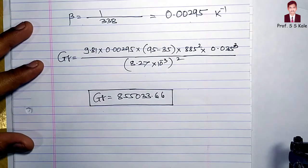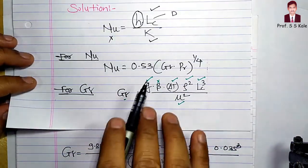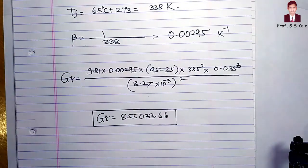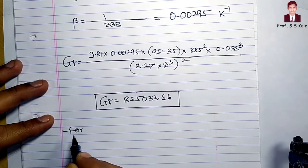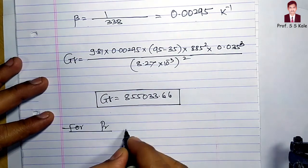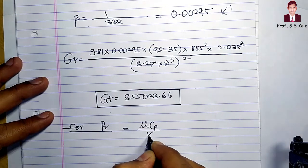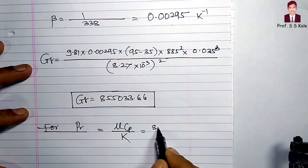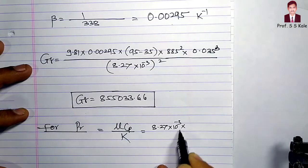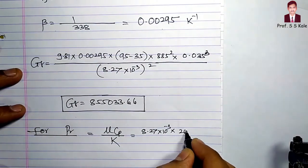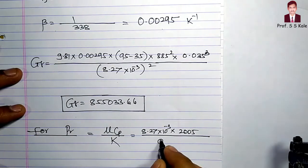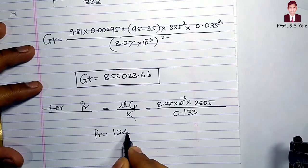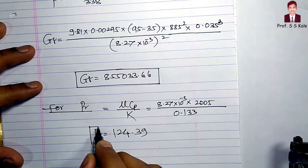Now I have to determine the Prandtl number, since it is not directly given. The Prandtl number formula is: Pr = μ · Cp / k. Substituting: μ = 8.27 × 10⁻³, Cp = 2005, k = 0.133. The Prandtl number comes to 124.39.